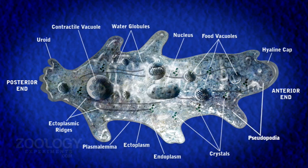These are formed as a result of the flowing forward of cytoplasm. Amoeba moves with an average speed of 1 micron per second. Amoeboid movement is considered to be the most primitive kind of animal movement.